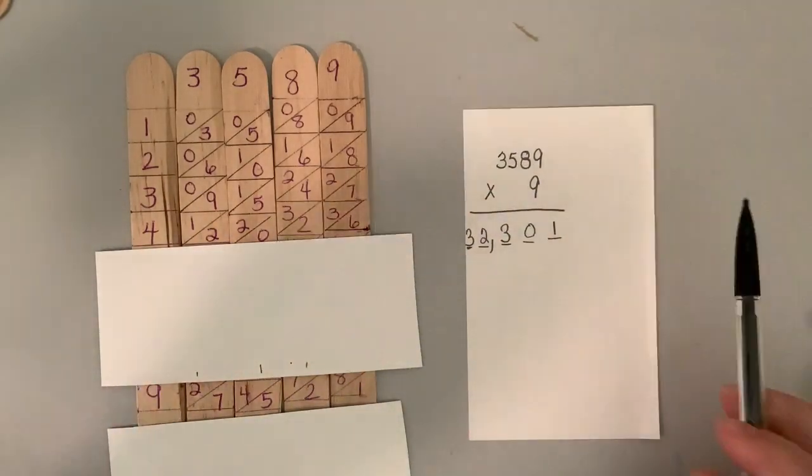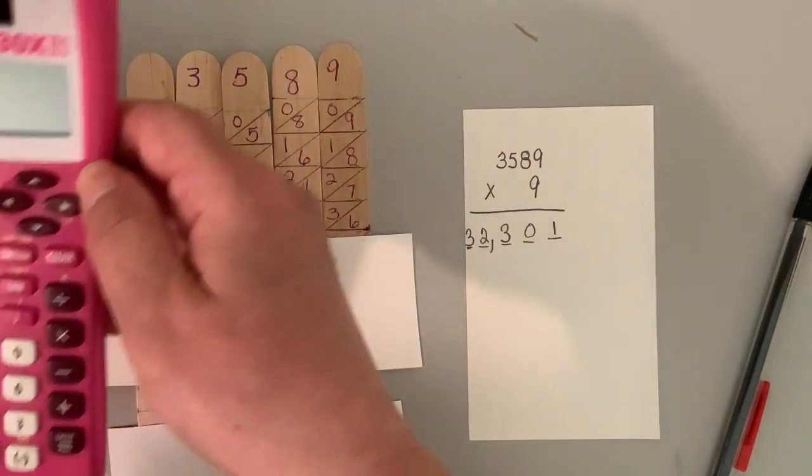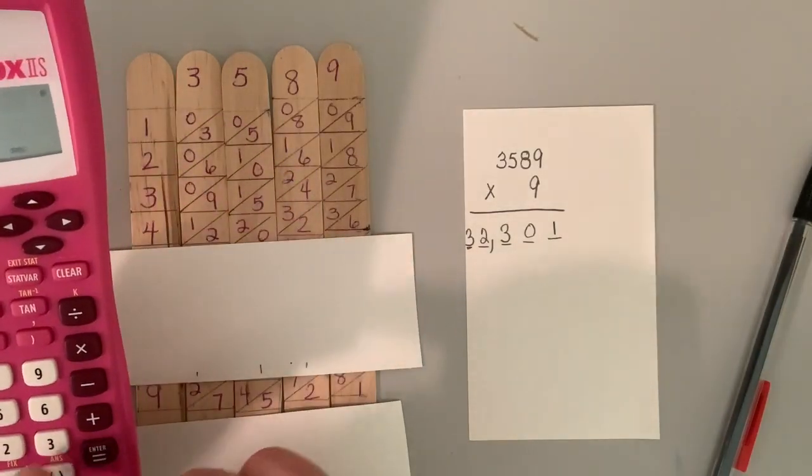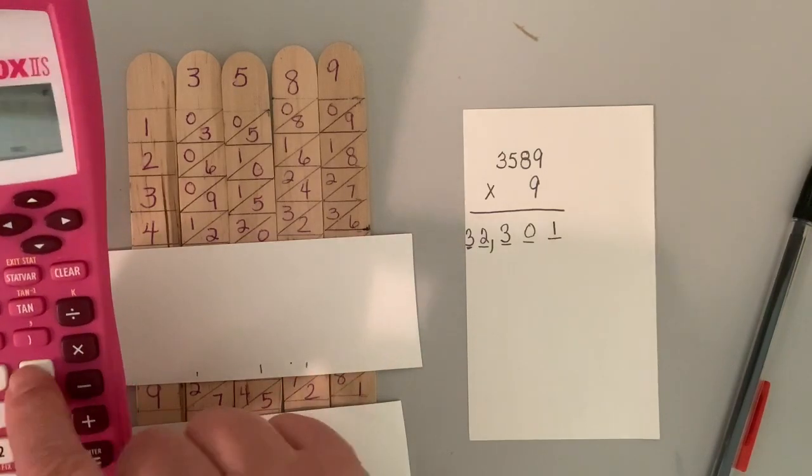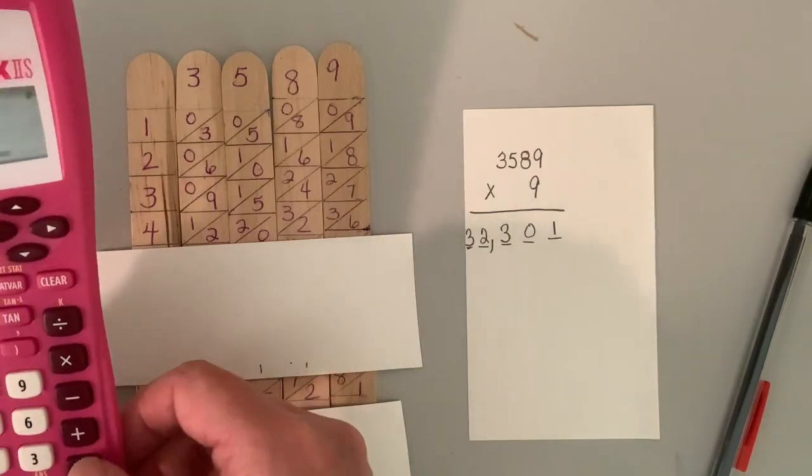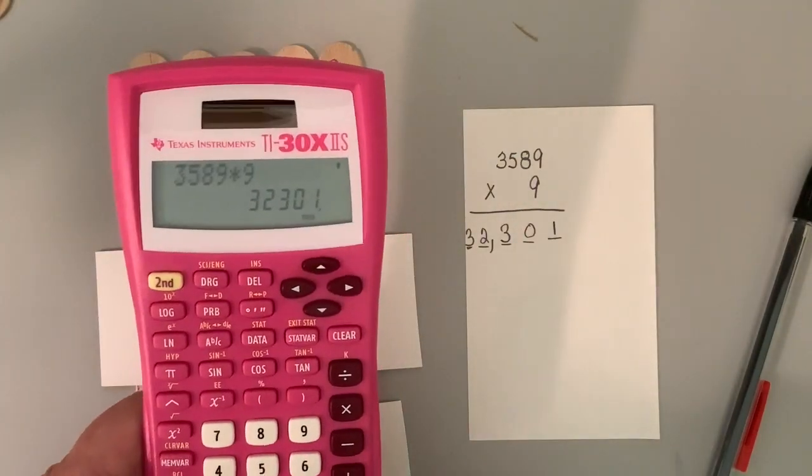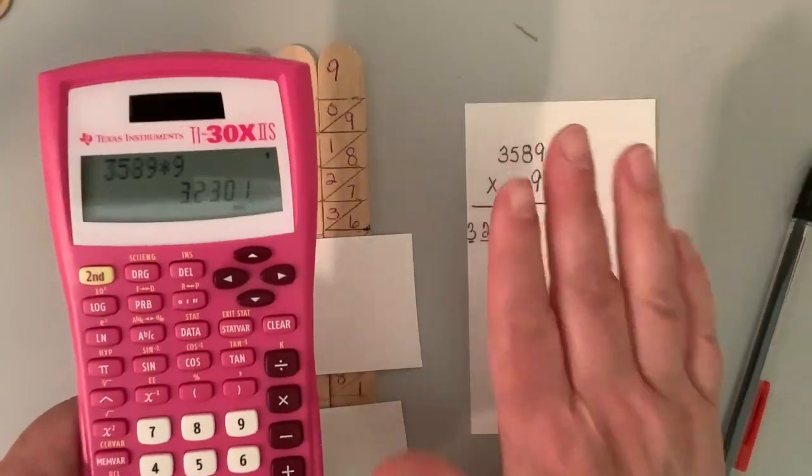So my answer is 32,301. And then just to prove that that's my answer, we want to say 3589 times nine equals 32,301. That is the correct answer. And so, that's how you do it.